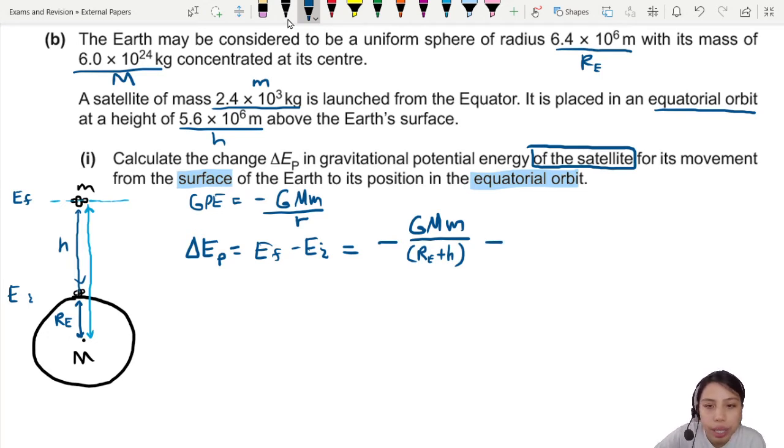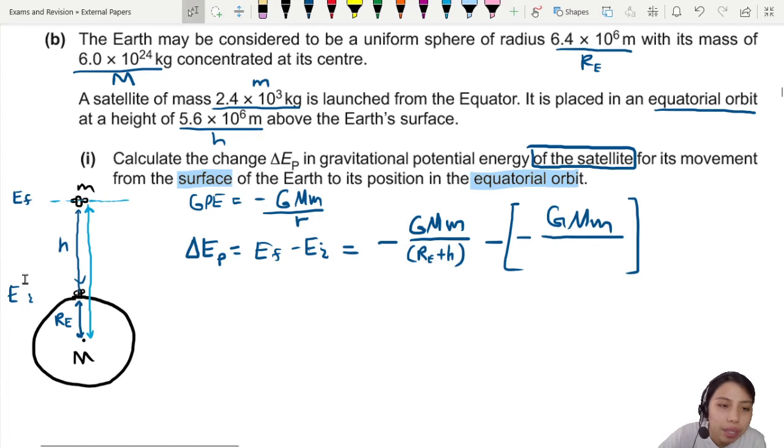Also we need to minus the initial. When you are on the surface of the Earth, negative negative. I can put positive lah, but I want to show you all the working. So this one will be GMM over, now we are at the surface of the Earth, so that will be down here. What is the energy there? Well, this is going to be R_E. That's all. Alright, let's do some calculations.